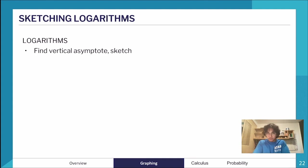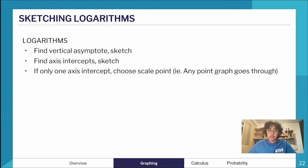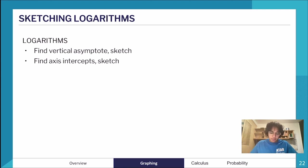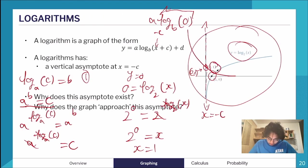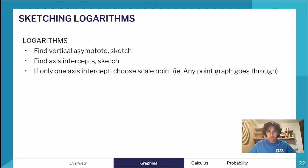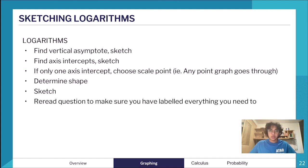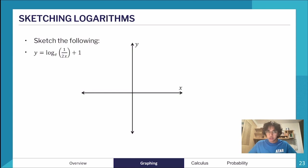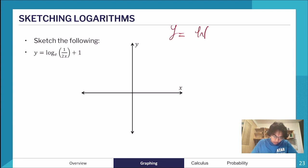To sketch a logarithm: find the vertical asymptote first; then find the axis intercepts (if only one, choose a scale point like (2, 1)); determine the shape — which way is it pointing; sketch it; then re-read the question. For y = ln(1/(2x)) + 1, rewrite as y = ln((2x)^(−1)) + 1 = −ln(2x) + 1. The negative means the graph is reflected.